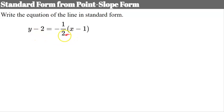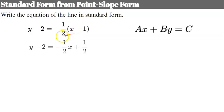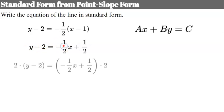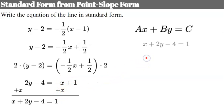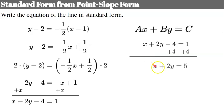First, I'll distribute the negative one-half: negative one-half times x gives negative one-half x, and negative one-half times negative 1 gives positive one-half. Now I'll clear the denominator by multiplying every term by 2. 2 times y is 2y; 2 times negative 2 is negative 4; 2 times negative one-half x is negative x; and 2 times one-half is 1. Adding x to each side gives x plus 2y minus 4 equals 1. Then adding 4 to each side gives x plus 2y equals 5, now in standard form.